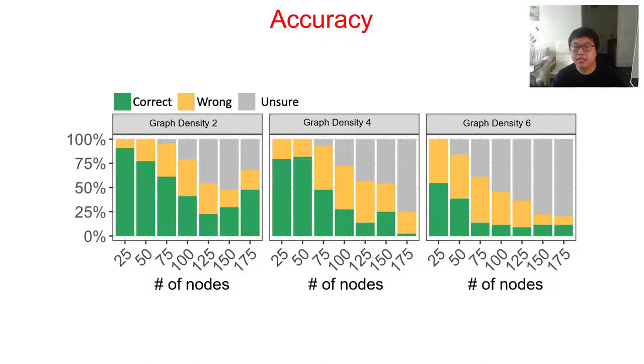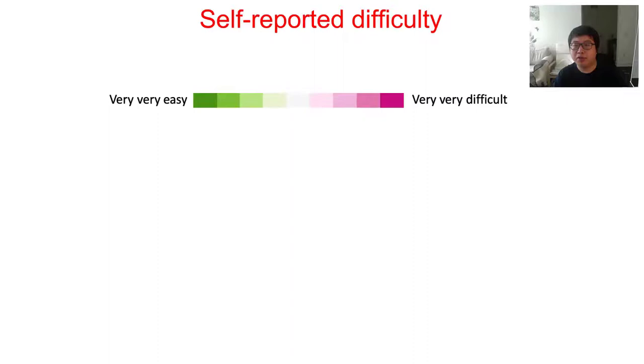We also tested graphs in different densities. As what we would expect in all graph densities, with increasing number of nodes, the accuracy generally went down. You may also notice that for large graphs, the accuracy was even close to zero, while for the smallest graph, our participants achieved a high accuracy. We do this on purpose to cover a wide range of graph sizes. In this way, we were able to capture a wide range of all the measures we are going to talk about.